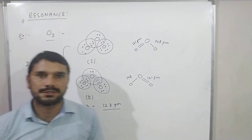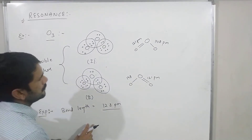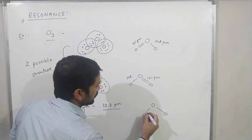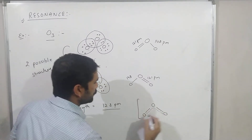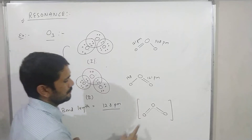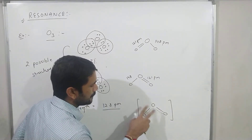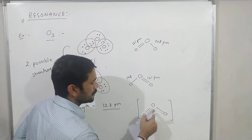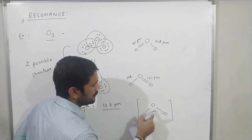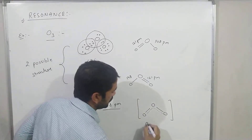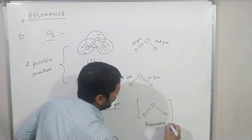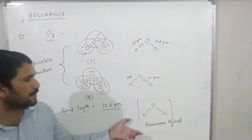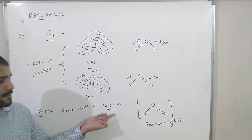To explain this, the concept of resonance was introduced. Resonance states that the bond between oxygen atoms in this molecule is neither completely single nor completely double, but rather an intermediate bond. Neither a pure single bond nor a pure double bond forms — an intermediate bond forms, and both bonds are equivalent. This intermediate bond is shown with a dotted line, meaning it is neither completely single nor completely double. This structure is called the resonance hybrid, and this process is called resonance.